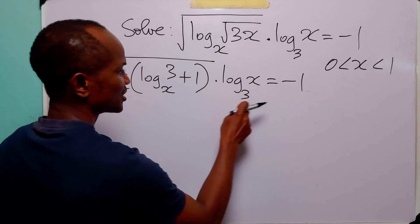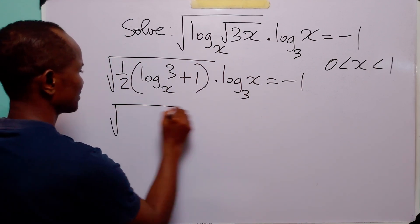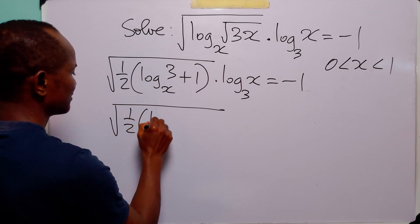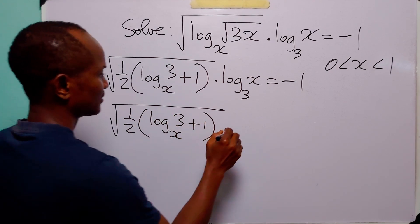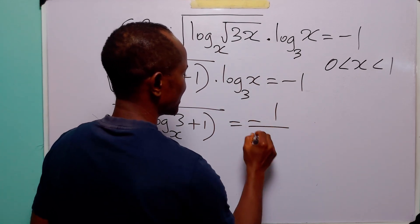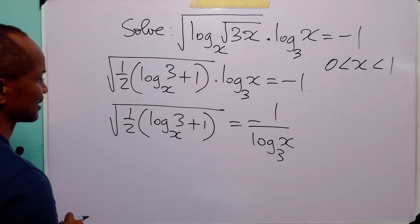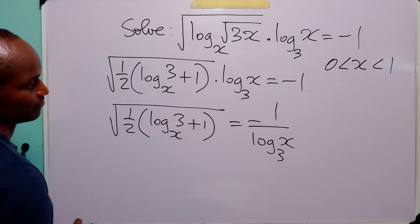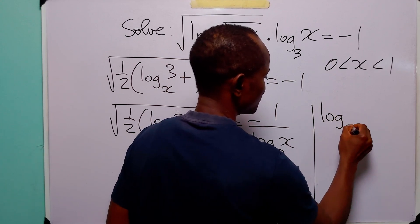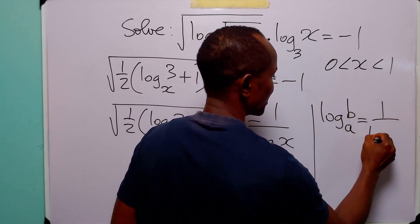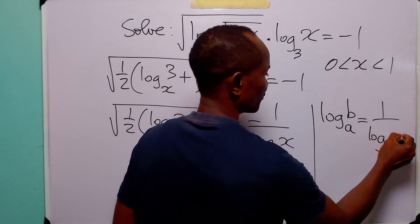Next, let us divide both sides of this equation by log to base 3 of x. When we do that, we have half multiplied by log to base x of 3 plus 1, is equal to minus 1 divided by log to base 3 of x. At this point let us also remember that log to base a of b is equal to 1 over log to base b of a.